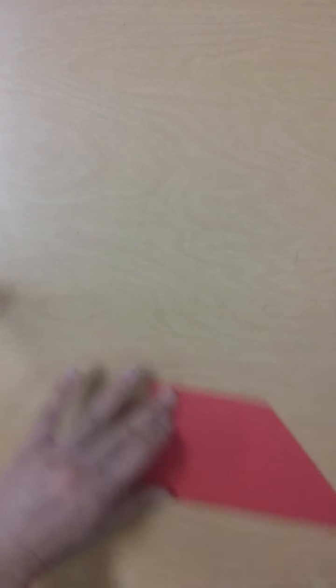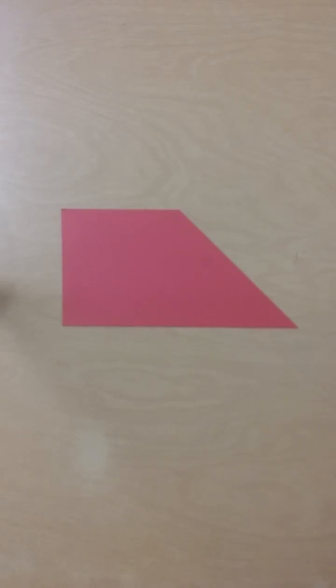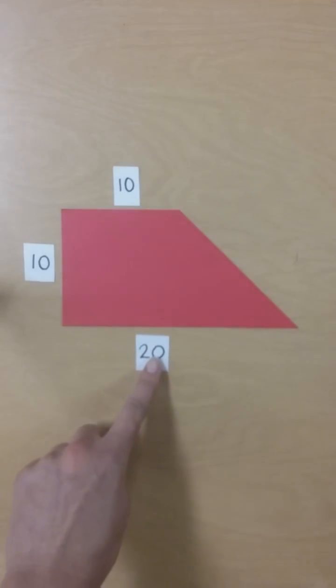Now, sometimes you have an object like this one that's an irregular shape. And I went ahead and measured this in advance. This side is 10 units, this is also 10 units, this side is 20 units, and this side is 14.